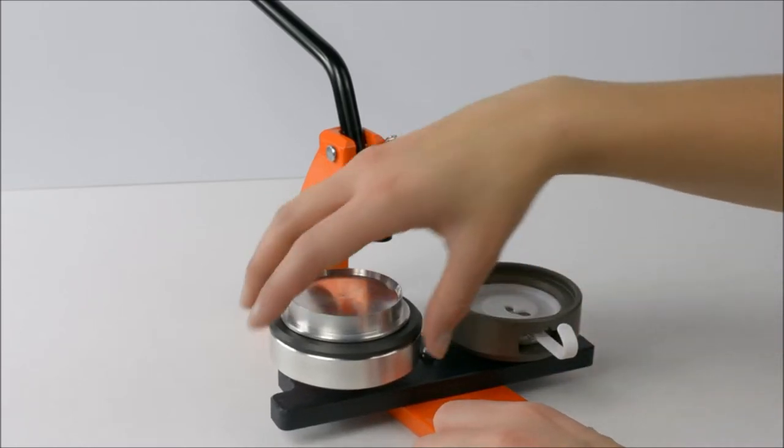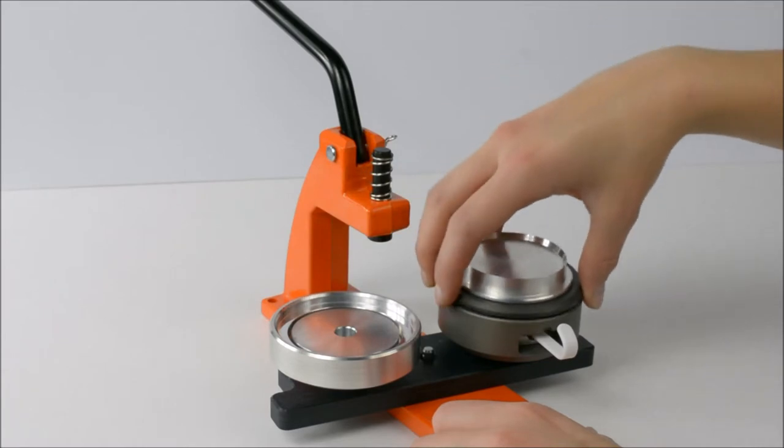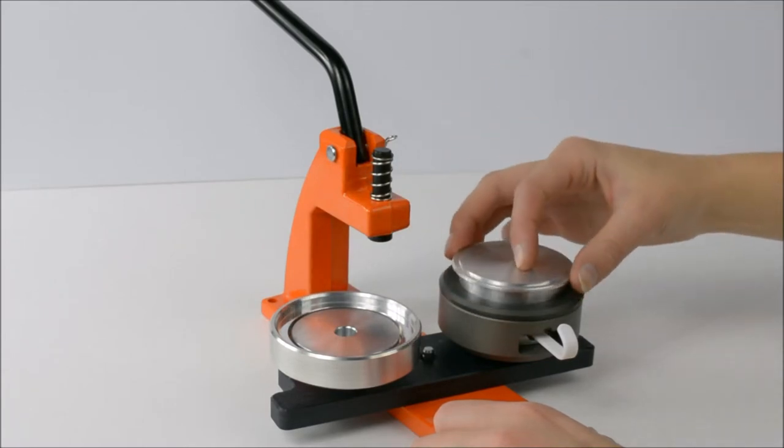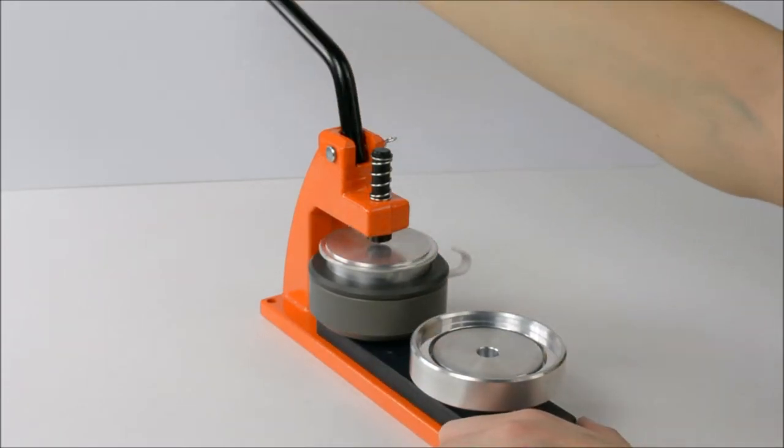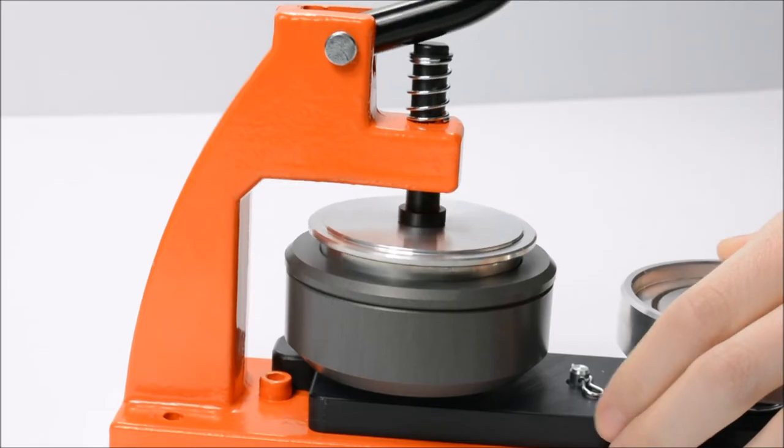Move the grey ring and top hat onto the second die, then turn the top hat upside down so it fits into the grey ring. Rotate the dies again so the second die is directly under the handle and pull firmly down.